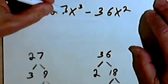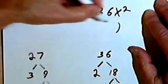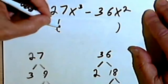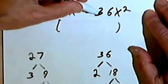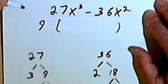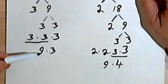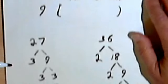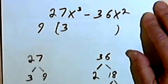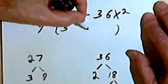So here's my 27x to the 3rd minus 36x squared. I want to pull out the greatest common factor. And as far as the coefficients are concerned, I know that that greatest common factor is 9. Looking at what I had down here, that means I'm going to be left inside the parentheses with a 3.